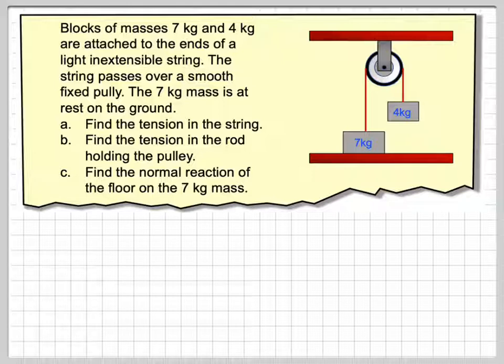The string passes over a smooth, fixed pulley, so no friction in the pulley. The 7kg mass is at rest on the ground.